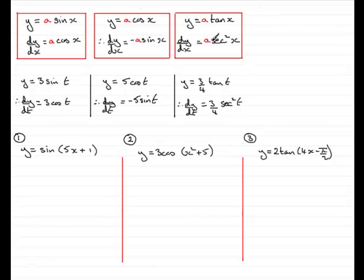Okay, so how's this going to help when it comes to differentiating my examples 1, 2 and 3? Well, you'll notice that in these examples, I haven't got a single letter here as I had up here in these examples, like we had just x or just t. You'll notice it's much more than that, 5x plus 1 here, x squared plus 5 and 4x minus pi upon 2. And when you've got situations like this, you've got to turn to the chain rule.